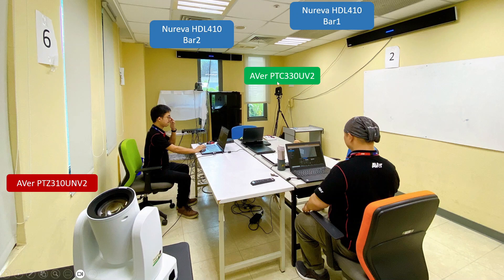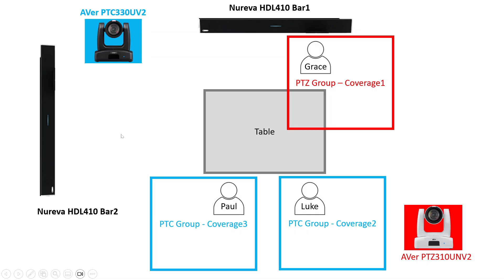In the front we have a PTC camera, and behind we have a PTC-310UMV2 camera. From the sky view, in the front we have bar 1, on the side wall we have bar 2, and the table is in the center.